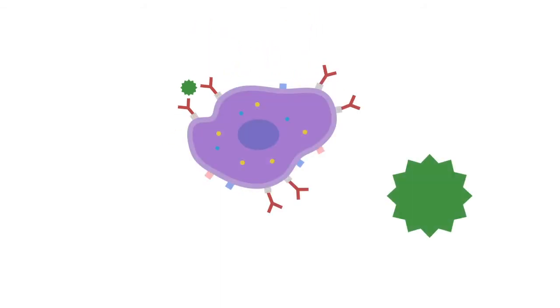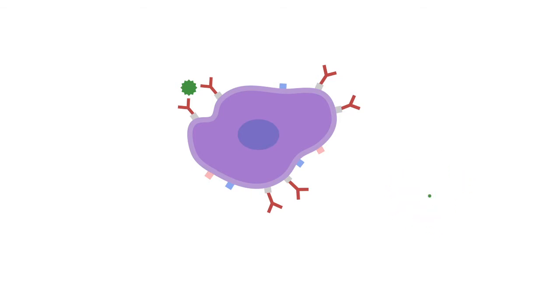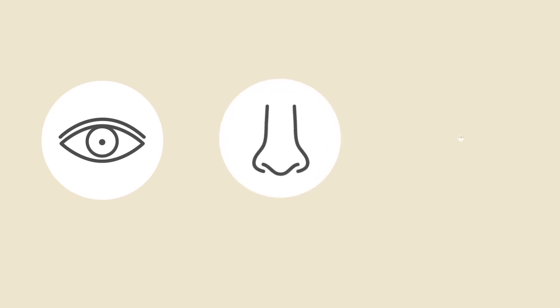When a grass pollen hits one of these antibody receptors on the mast cell, the mast cell will commit chemical warfare. The chemical warfare it creates releases all sorts of things that are designed to neutralize whatever is coming in. It's also designed to alert your body consciously that there's something going on — either in the eye, the nose, or in your chest.